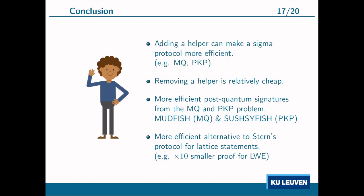In conclusion, we showed that a helper party doing a trusted setup enables more efficient sigma protocols for MQ and PKP, and that removing this helper can be done cheaply. This results in sigma protocols more efficient than existing ones for MQ and PKP. Applying the Fiat-Shamir transform yields new post-quantum signature schemes — MUDFISH and SUSHIFISH — which are more efficient than existing signatures relying solely on the hardness of MQ and PKP. Finally, our PKP sigma protocol serves as a more efficient alternative to Stern's protocol for many lattice-based statements.